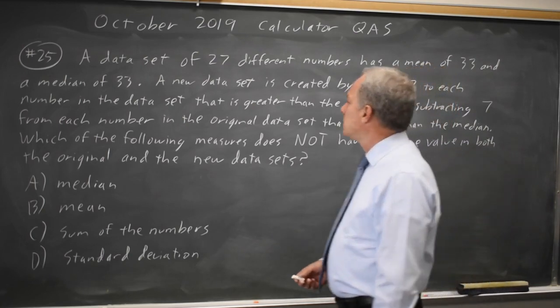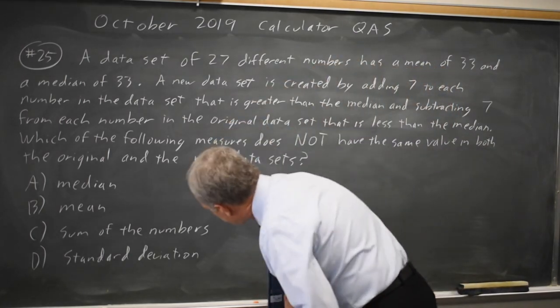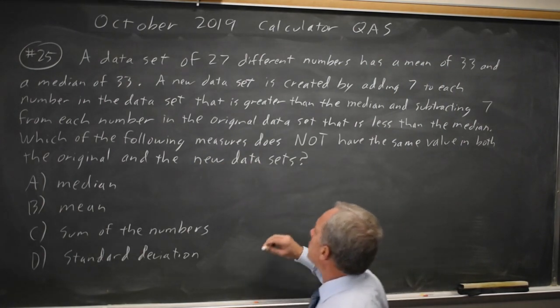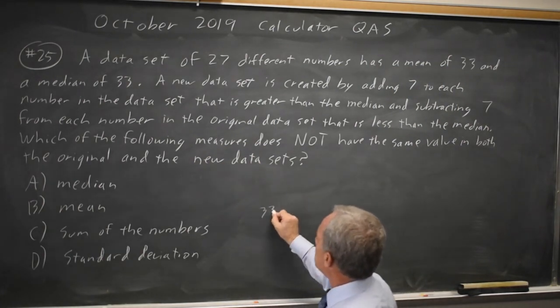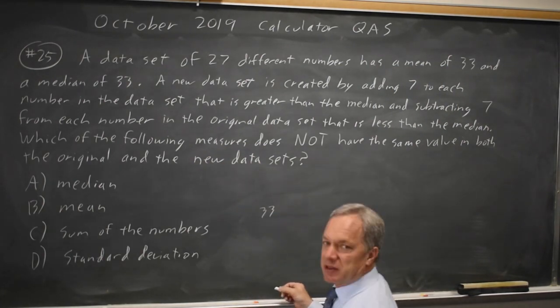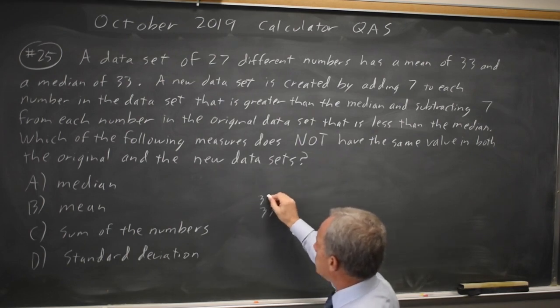I'm going to change the wording of that a little and look at only 7 instead of 27. So if the median is 33 out of 7 numbers, there's 3 numbers less than that: 32, 31, and 30.